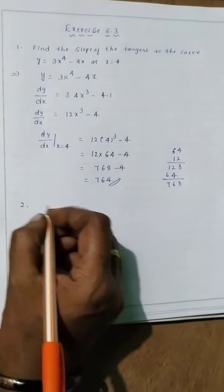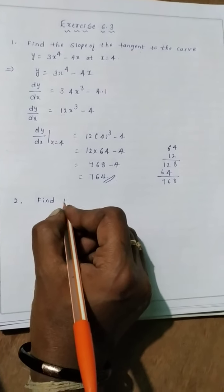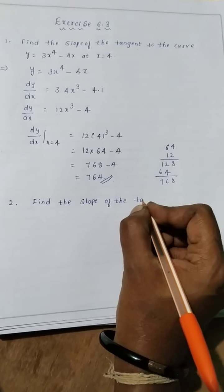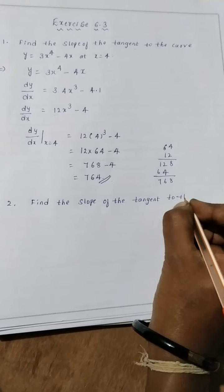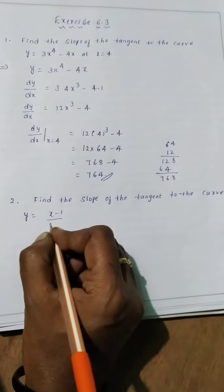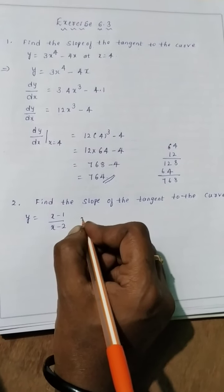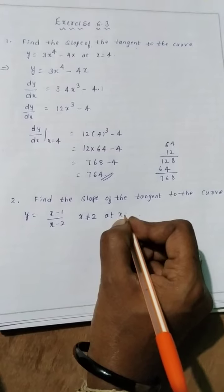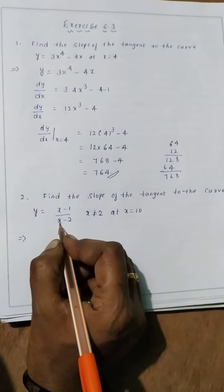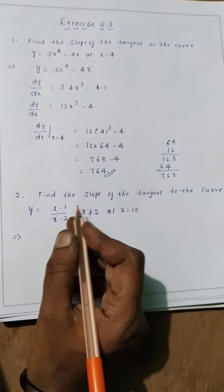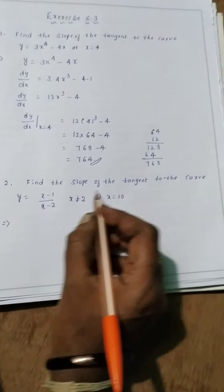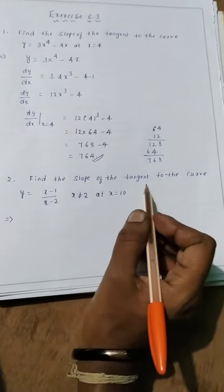The second question is also: find the slope of the tangent to the curve. Here y = (x - 1)/(x - 2), where x ≠ 2, at x = 10. The condition x ≠ 2 means if you substitute x = 2, the denominator becomes 0, and anything divided by 0 is not defined. So differentiate this and then replace x by 10 to get the slope.